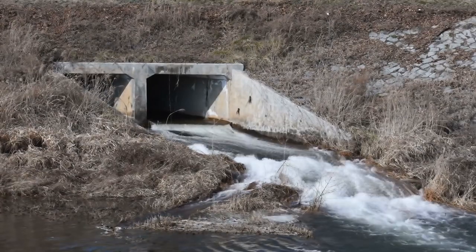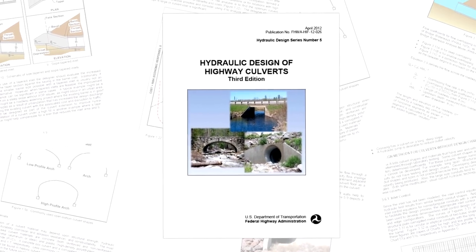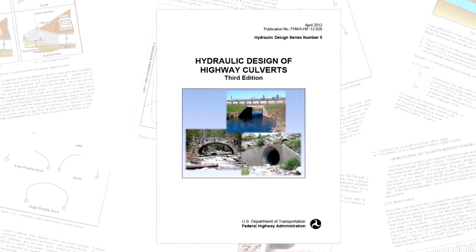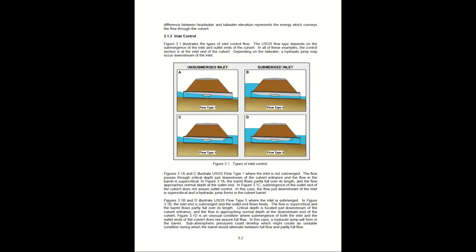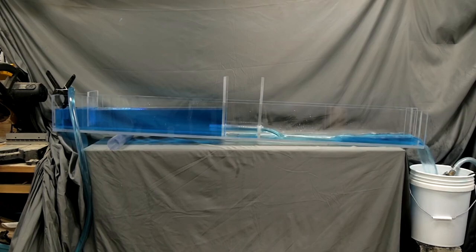Just a pipe under a road — how complicated could it be? Allow me to introduce you to the US Federal Highway Administration's Hydraulic Design of Highway Culverts, third edition: 323 pages of guidelines on how to get water to flow under a road. I've taken my favorite parts and built a demonstration so you can appreciate the modern marvel that is the highway culvert. A culvert really only has two jobs: it has to hold up the weight of traffic passing over without collapsing, and it has to let enough water pass through without overtopping the roadway.